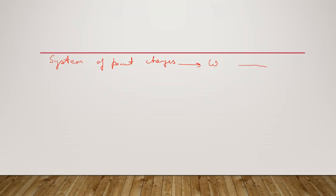Now suppose there is a system of two charges q1 and q2 placed at points A and B at a certain distance r. The potential at point B due to the charge q1 is given by V equals 1 by 4 pi epsilon naught, q1 by r.